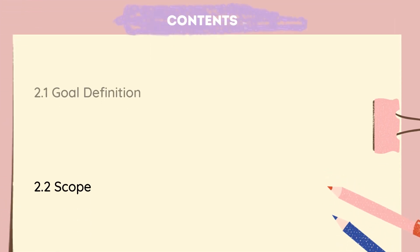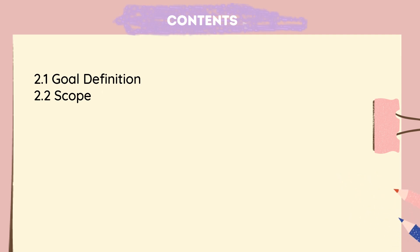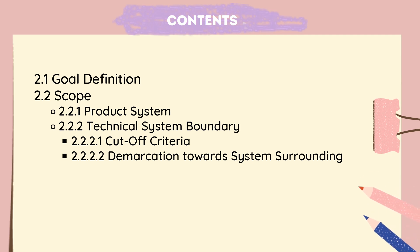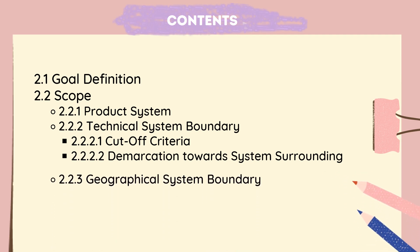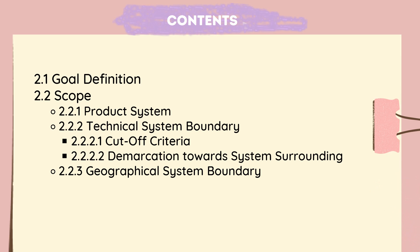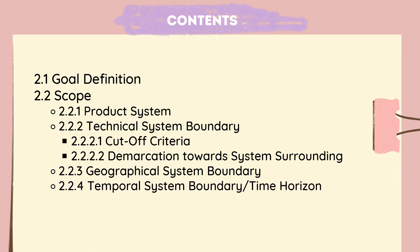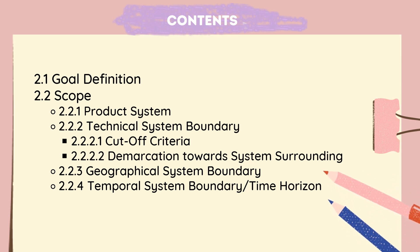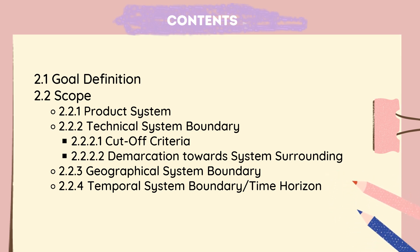Today, I will share with you guys about goal definition and scope, including Product System, Technical System, Cut-off Criteria and Demarcation Towards System Surrounding, Geographical System Boundary, and lastly Temporal System Boundary, Time Horizon. Before I start, I have to tell you that there will be a quiz at the end of this video, so sit down and pay your attention.